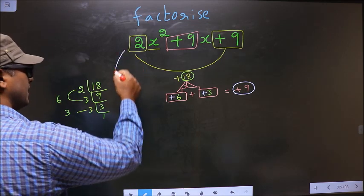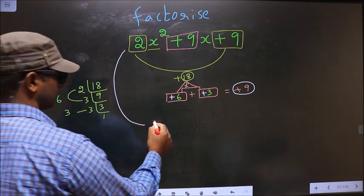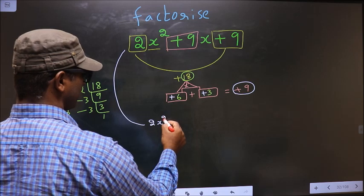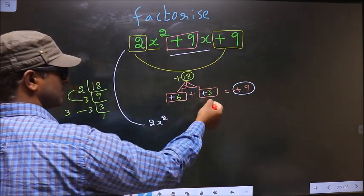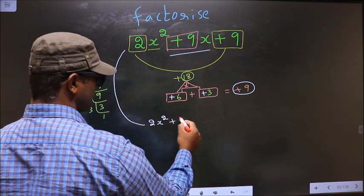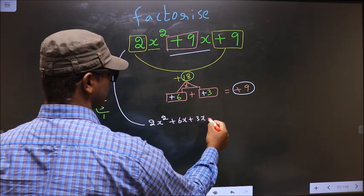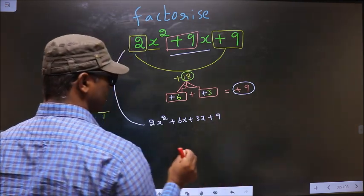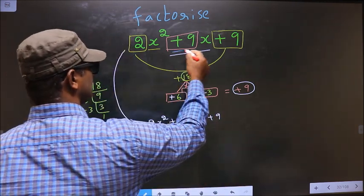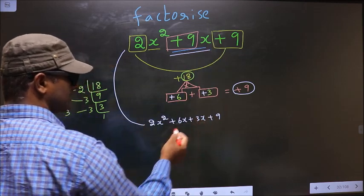Now you change this to 2x². In place of 9x, you should write this: that is +6x plus 3x plus 9. Did you understand? In place of 9x I have written this.